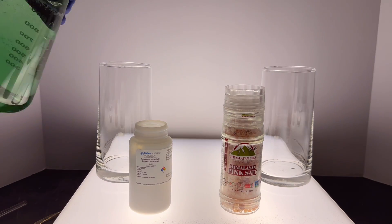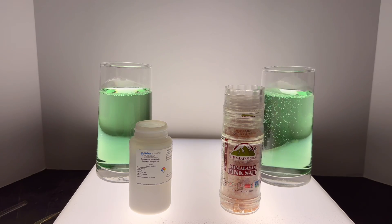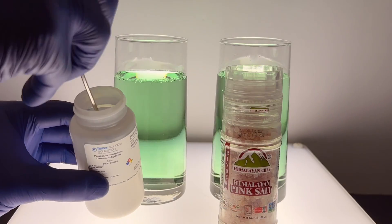To see if my suspicions were correct, I decided to take some neutral water at pH 7 and add some dipotassium phosphate and pink Himalayan rock salt to each.